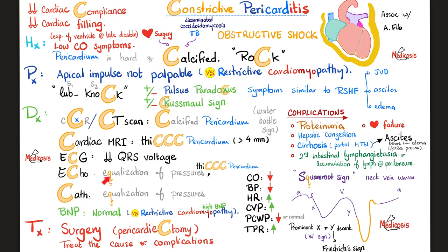On echocardiography or cardiac catheterization, you find equalization of pressure between all chambers — more prominent in severe pericardial effusion or cardiac tamponade. On the jugular venous waveform, you see the square root sign due to prominent Y-wave descent — easy come, easy go: a deep descent followed by a deep ascent — because the ventricle relaxes rapidly until it hits the pericardial wall.